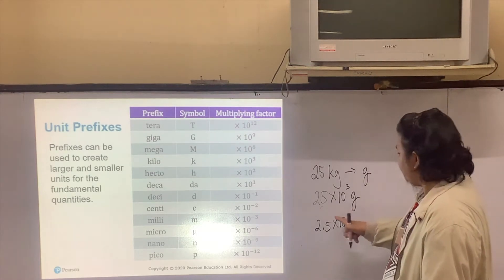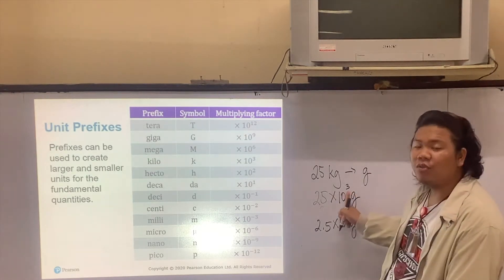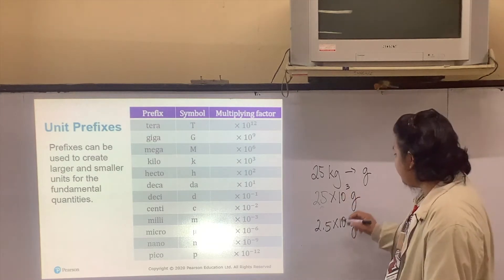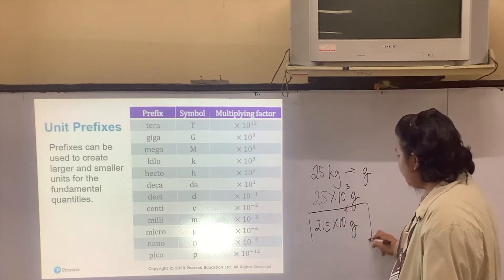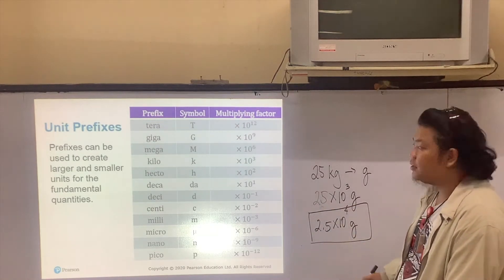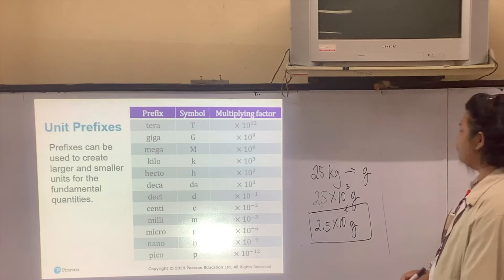So this will become, instead of times 10 to the power of 3, times 10 to the power of 4. And we are done converting this into grams. Allow me to walk you through the process again.